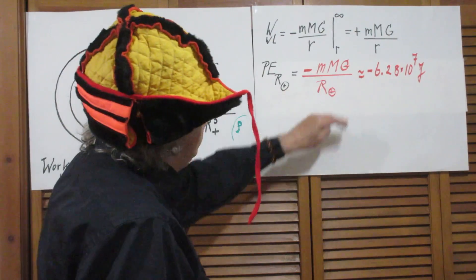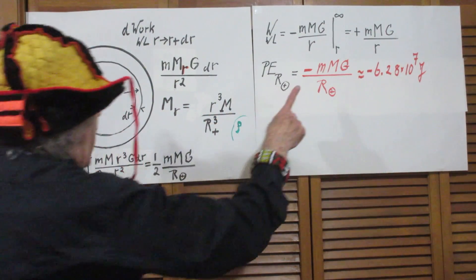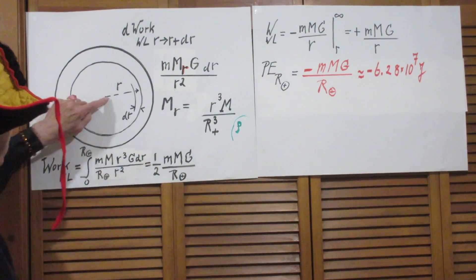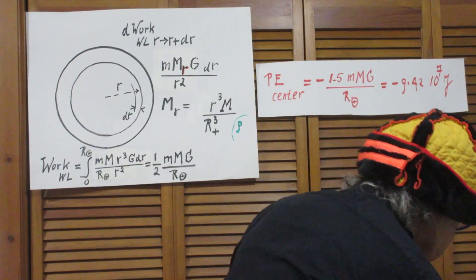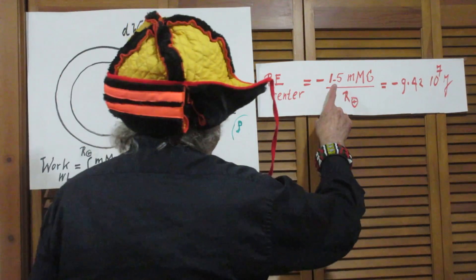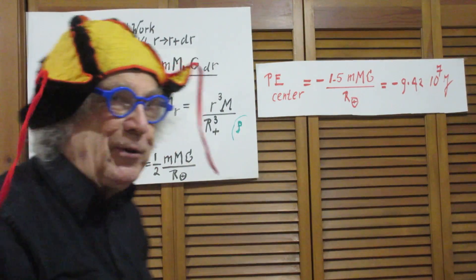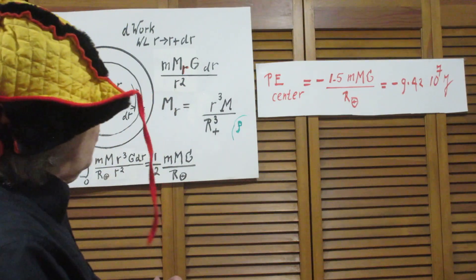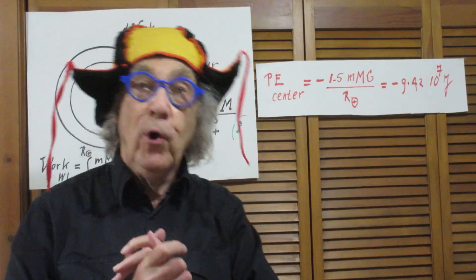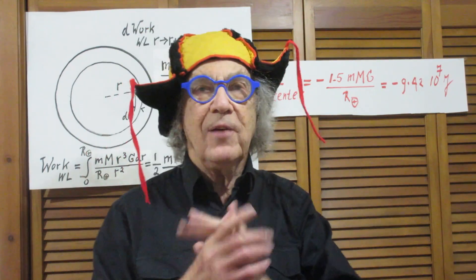We already know that at the surface the potential energy is minus MmG over R_earth. We now add minus one-half MmG over R_earth to find what it is at the center. So the potential energy at the center of any planet is three-halves times the gravitational potential energy at the surface — not at all obvious! The minus sign we have already explained. Using the numbers for the Earth, we find minus 9.42×10⁷ joules.